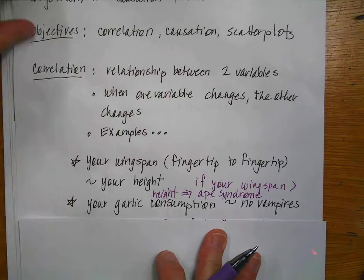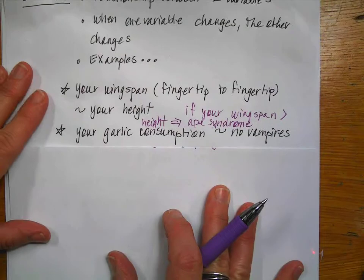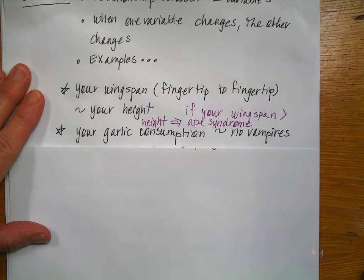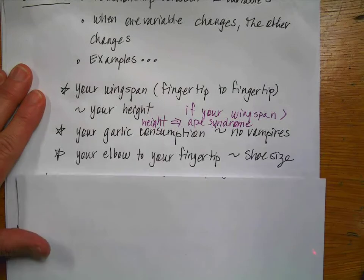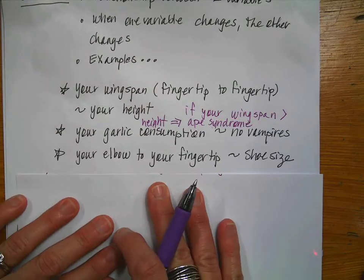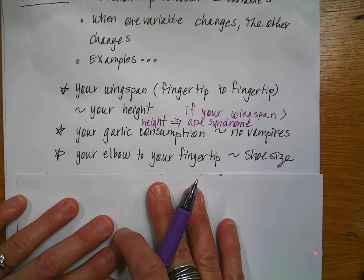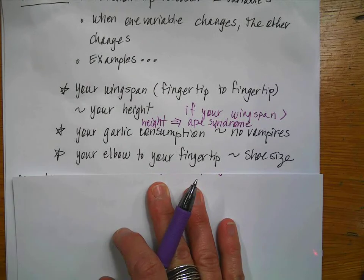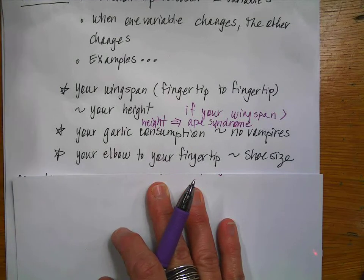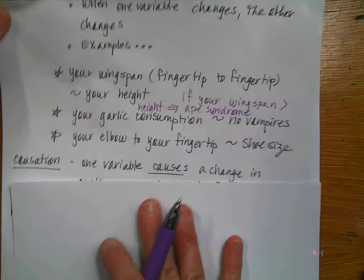The next one is kind of silly. Your garlic consumption means that no vampires will come around. Another correlation could be if you measure from your elbow to your fingertip, that's going to be approximately the same size as your shoe size. So those are correlations. Things, two variables, two different things that are related.